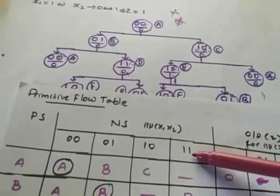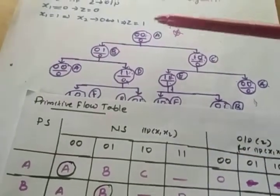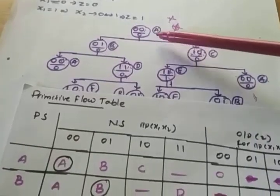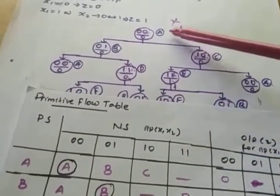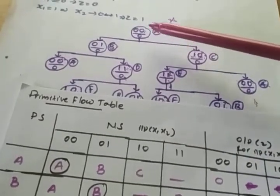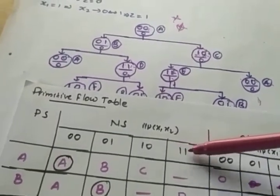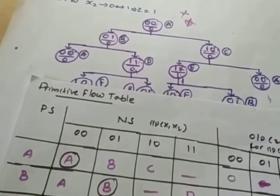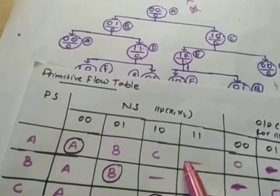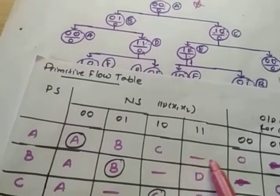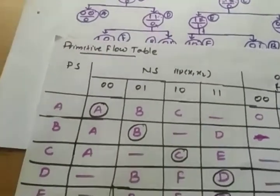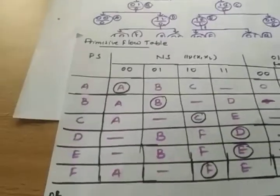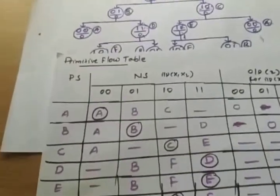Now consider the 1,1 combination. Is there any 1,1 combination at state a? No — state a has 0,0; 0,1; 1,0. The 1,1 is not there, because two bits are varying simultaneously from 0,0 to 1,1, so it is not possible. We represent it as a dashed line. That is how the flow table row for a is constructed.